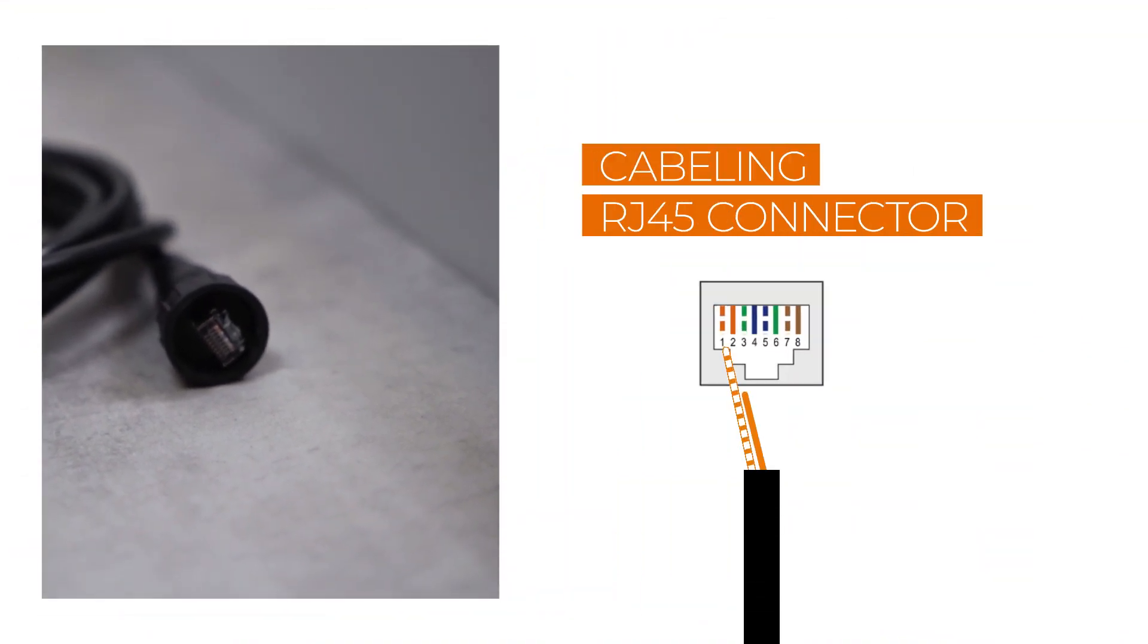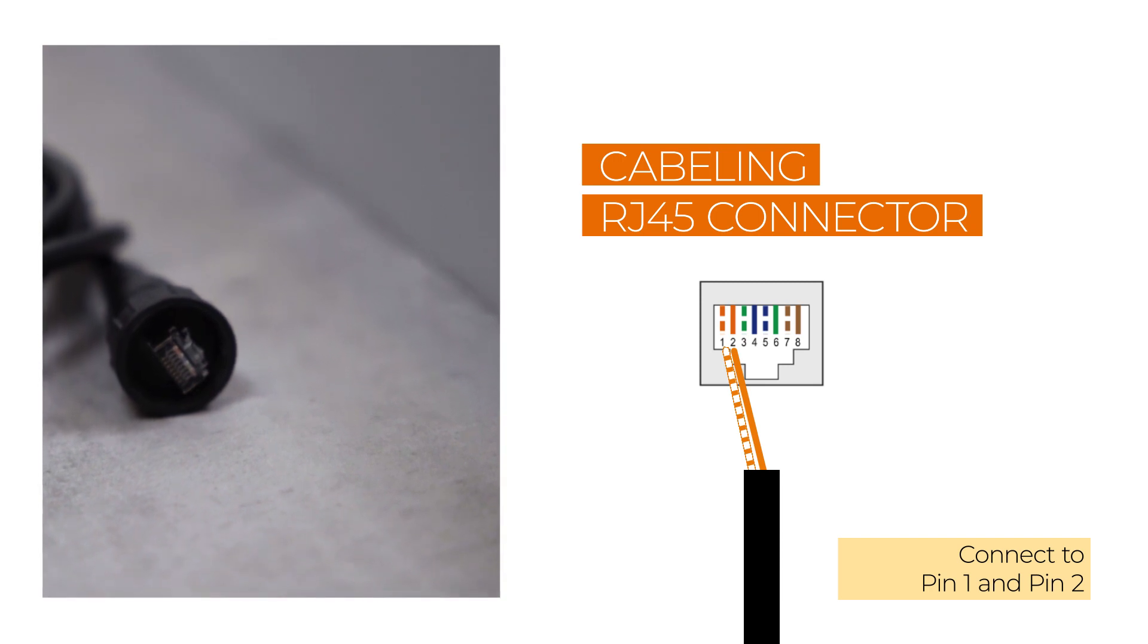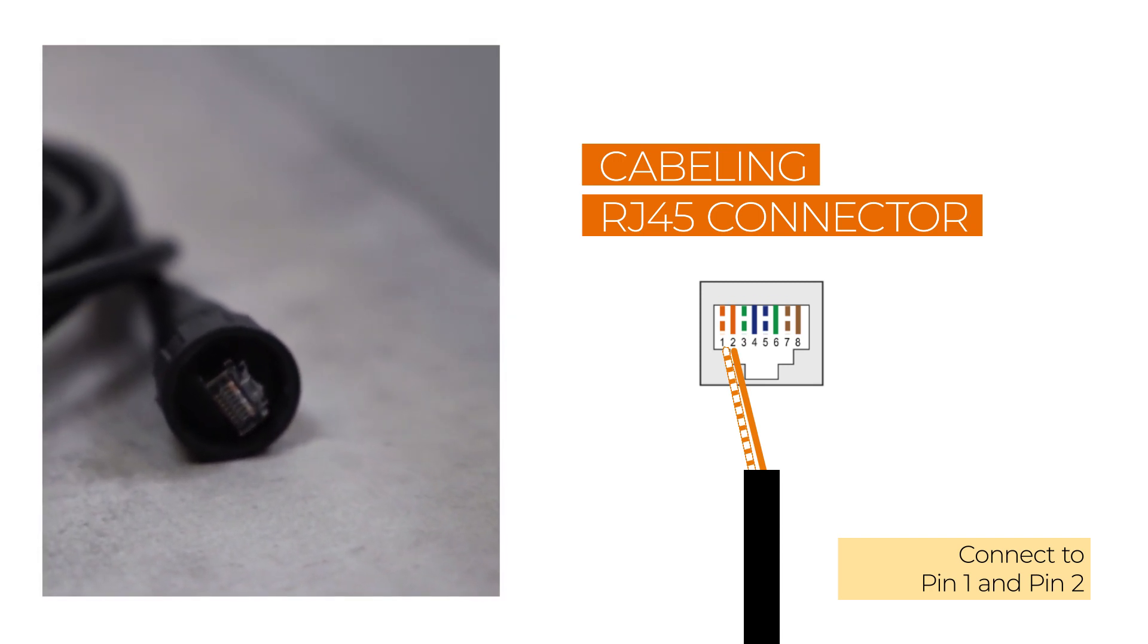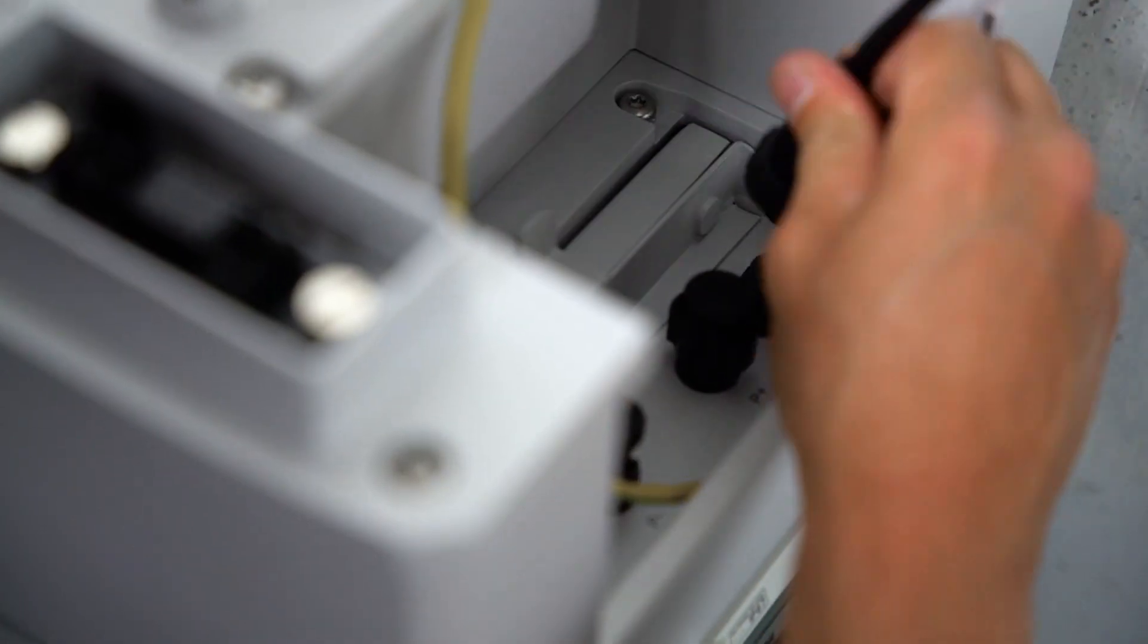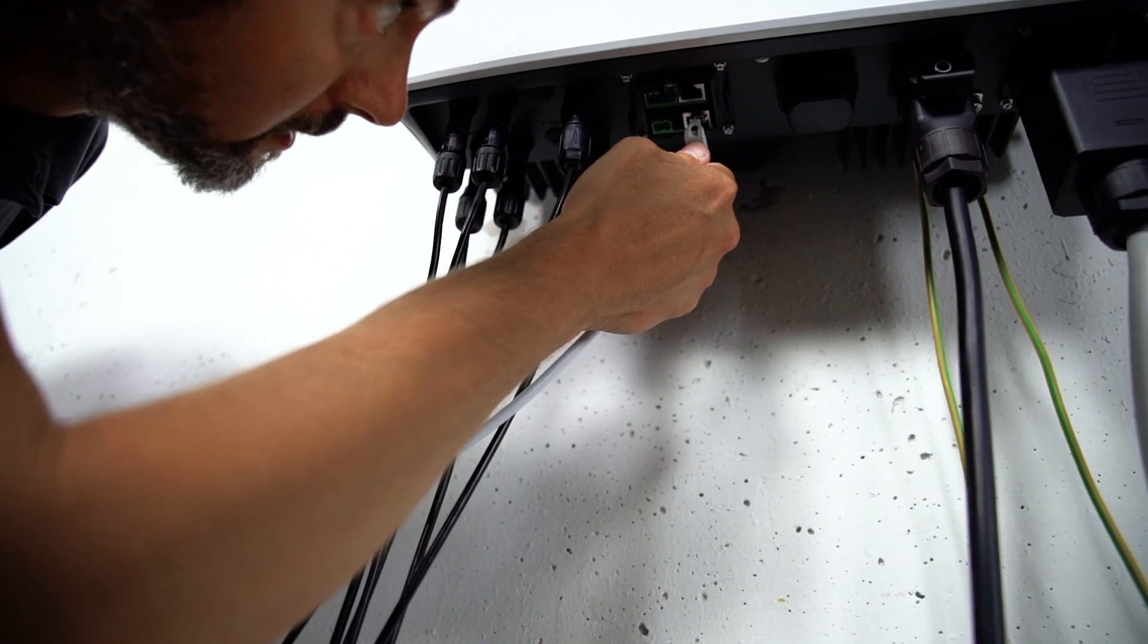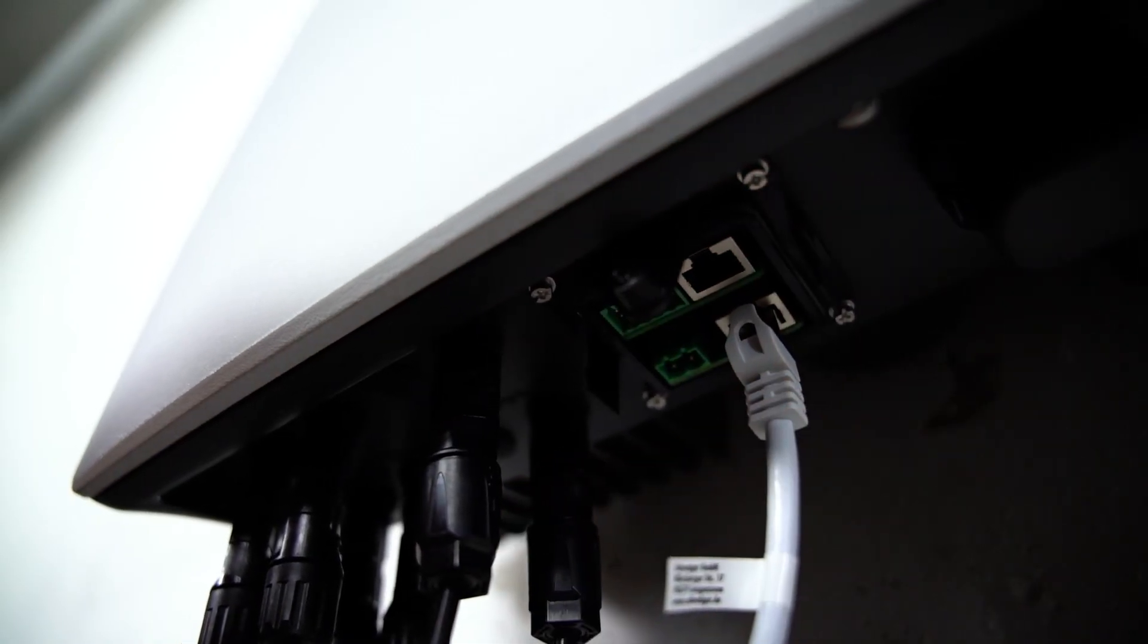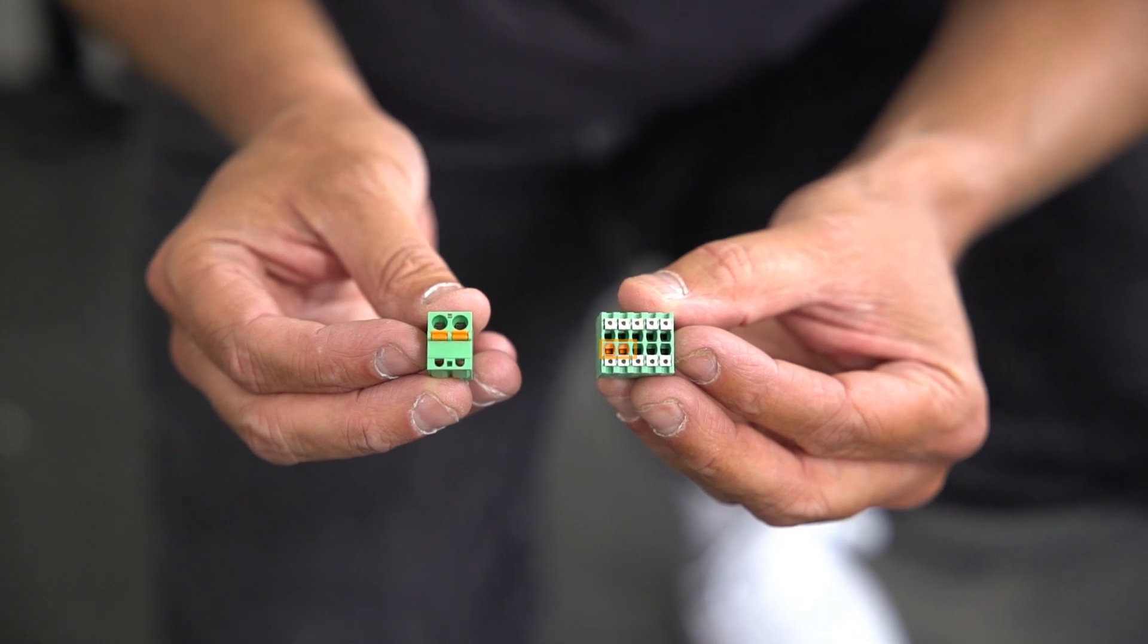The white-orange cable of the communication cable is connected to pin 1 and the orange cable to pin 2 on the RJ45 connector for the battery side. Connect the communication cable to the battery. The other end of the cable can be connected to the single-phase hybrid via ethernet or via the pins 2 and 4 of the communication plug.